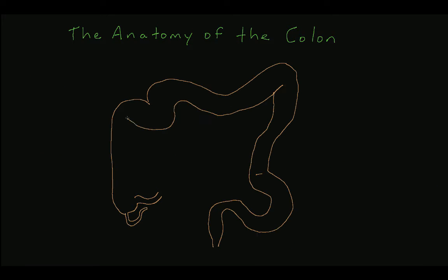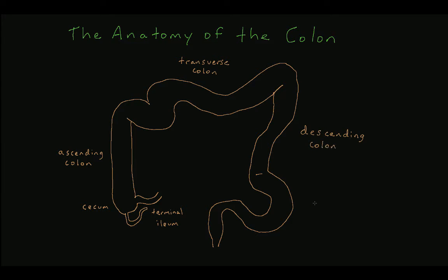The colon begins where the terminal ileum meets the cecum. The colon is described in terms of several sections: the ascending colon, the transverse colon, the descending colon, and the sigmoid colon. The colon ends when the 3-tenia coli extends circumferentially to form the outer longitudinal smooth muscle layer of the rectum. The ascending and descending colon both have attachments to the retroperitoneum. By contrast, the transverse colon and sigmoid colon do not have retroperitoneal attachments and can move freely within the abdomen.